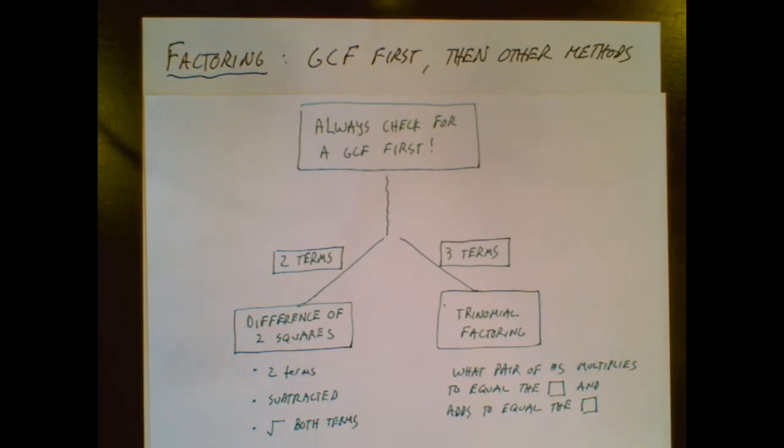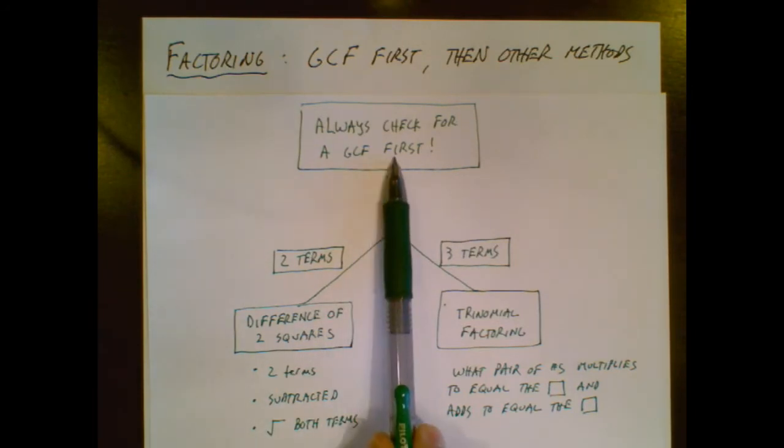And as we go through this, we're going to refer to this flowchart. It'll make more sense once we do a couple of examples. But we're going to always check for a GCF first. It's very important.